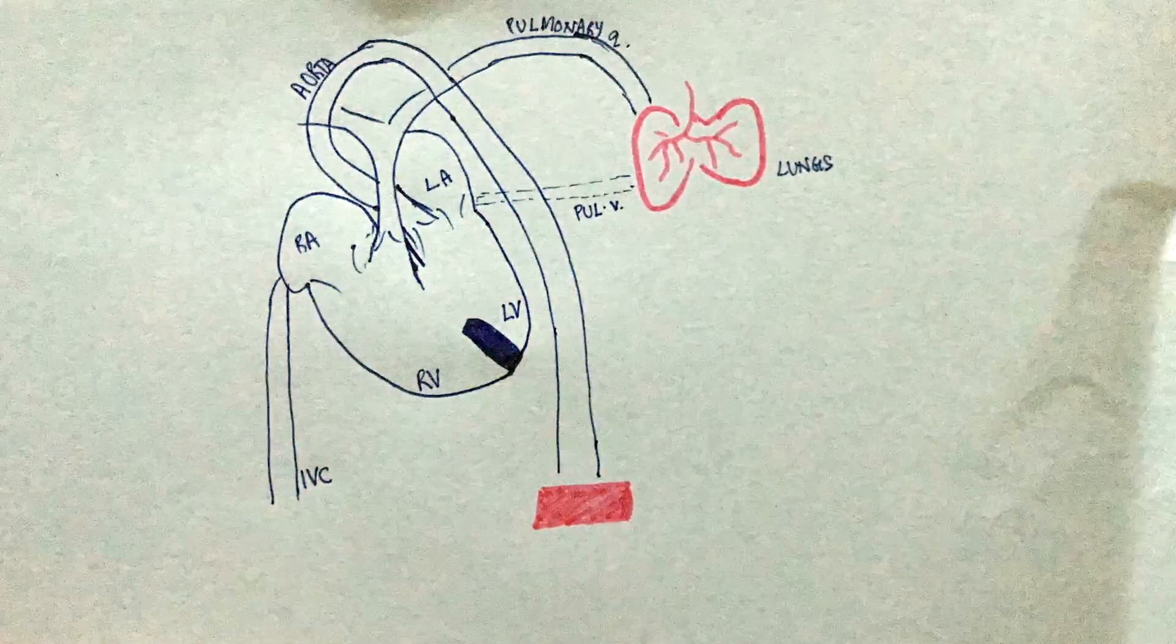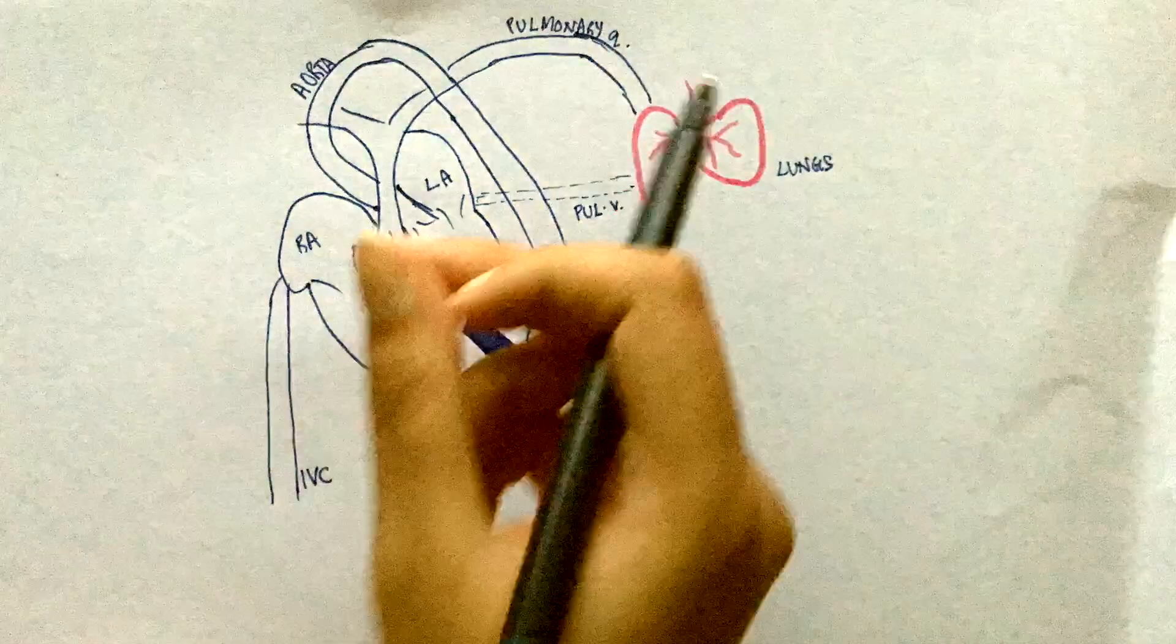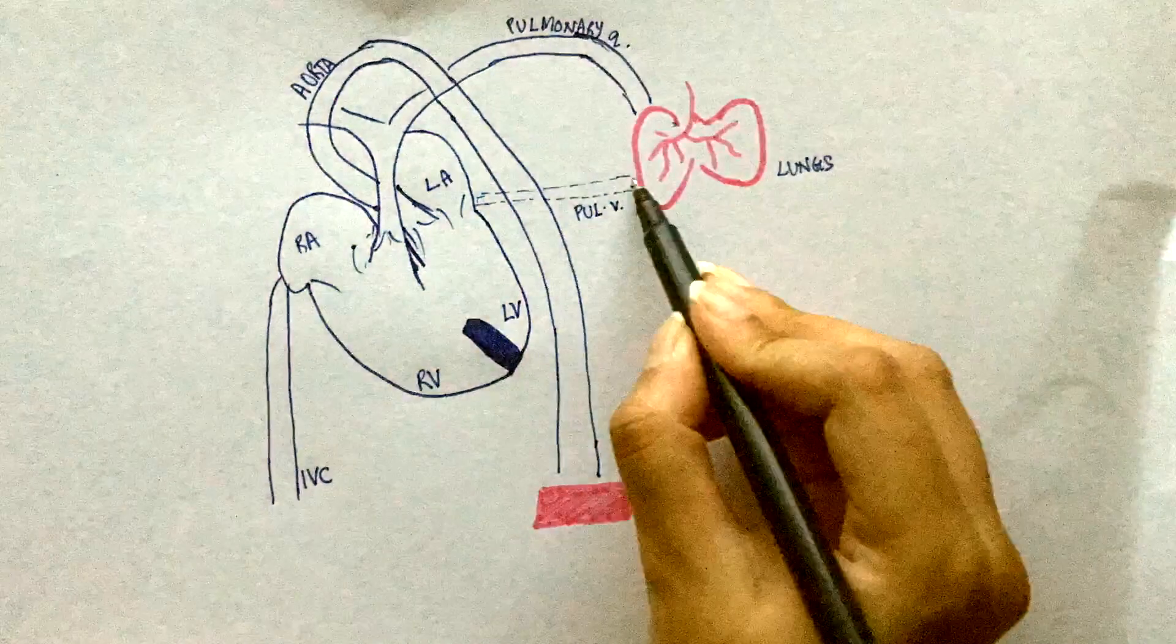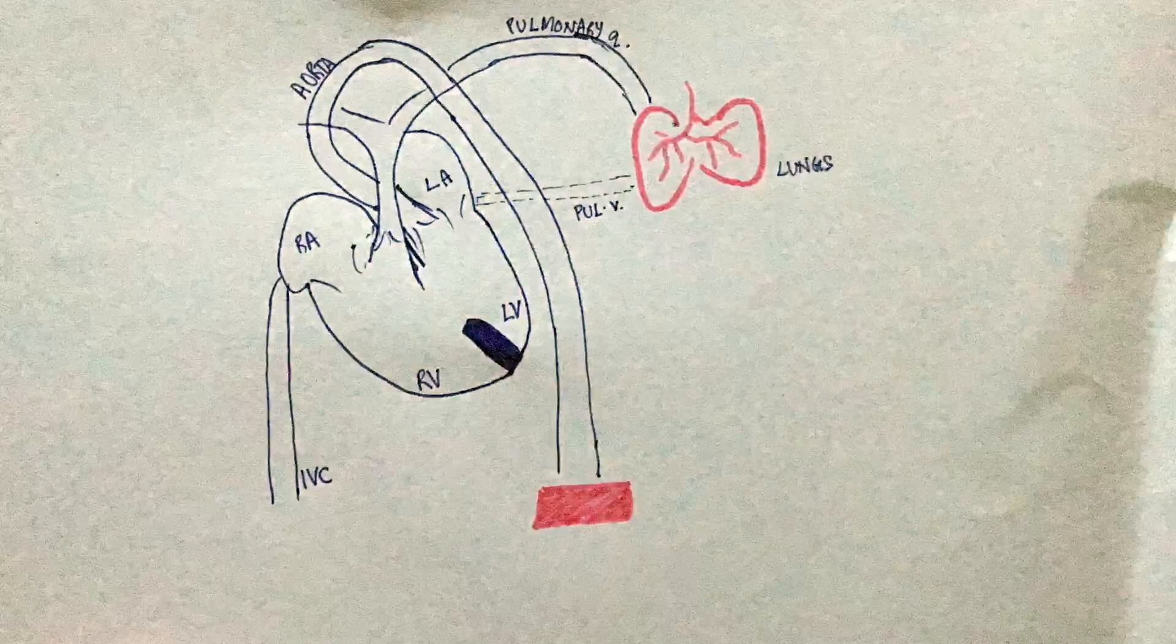when the outflow tract here is narrow, lesser blood goes to the lungs to get oxygenated. So, the blood coming back to the left atrium is not very rich in oxygen and hence very little oxygen is delivered to the tissues. Secondly,